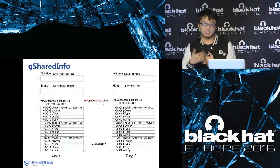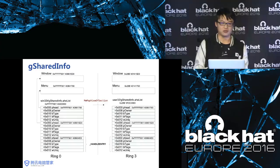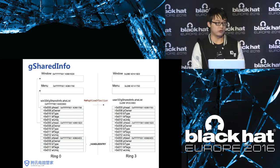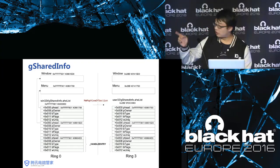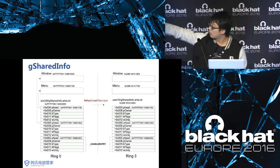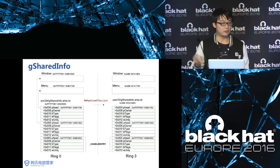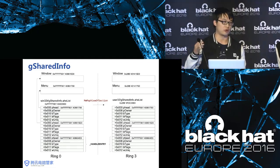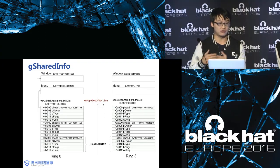The data in g-shared info is mapped into user space. This is a kind of information-leaking vulnerability, but Microsoft did not regard it as one — maybe they will fix it in Windows 11 or 12, I don't know. As you can see, the p-head is a member of the handle entry structure. This p-head will point to a window object, or it can also point to a menu object. We are going to focus on the window object.